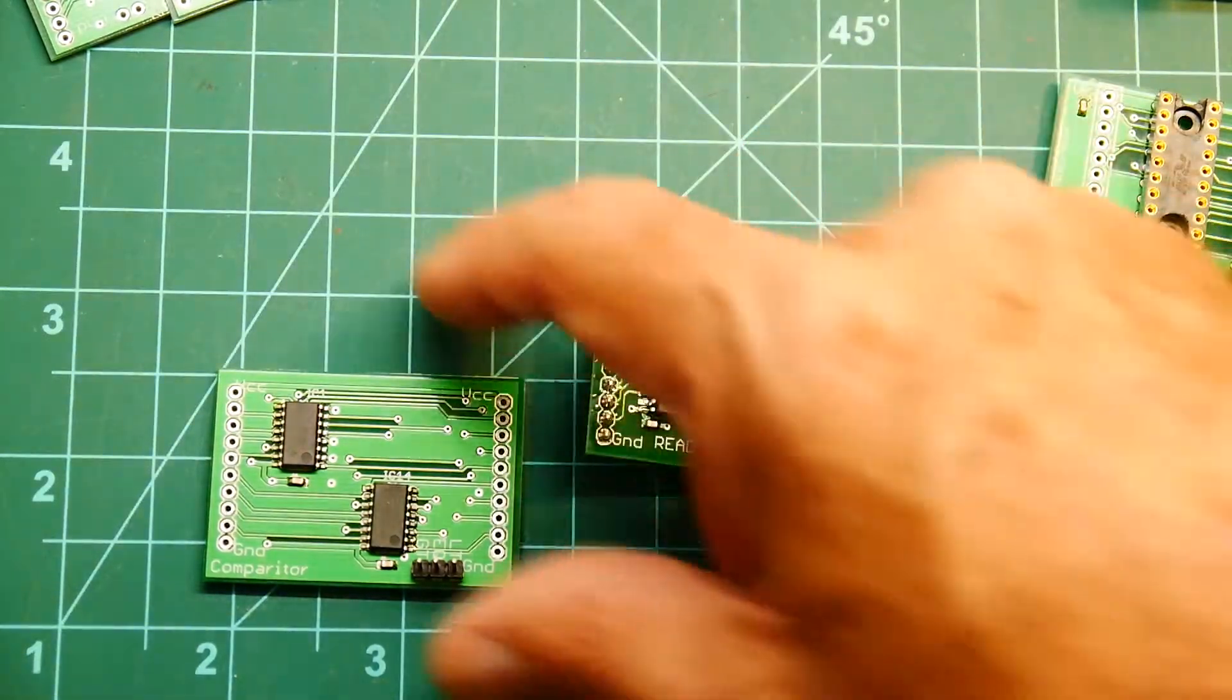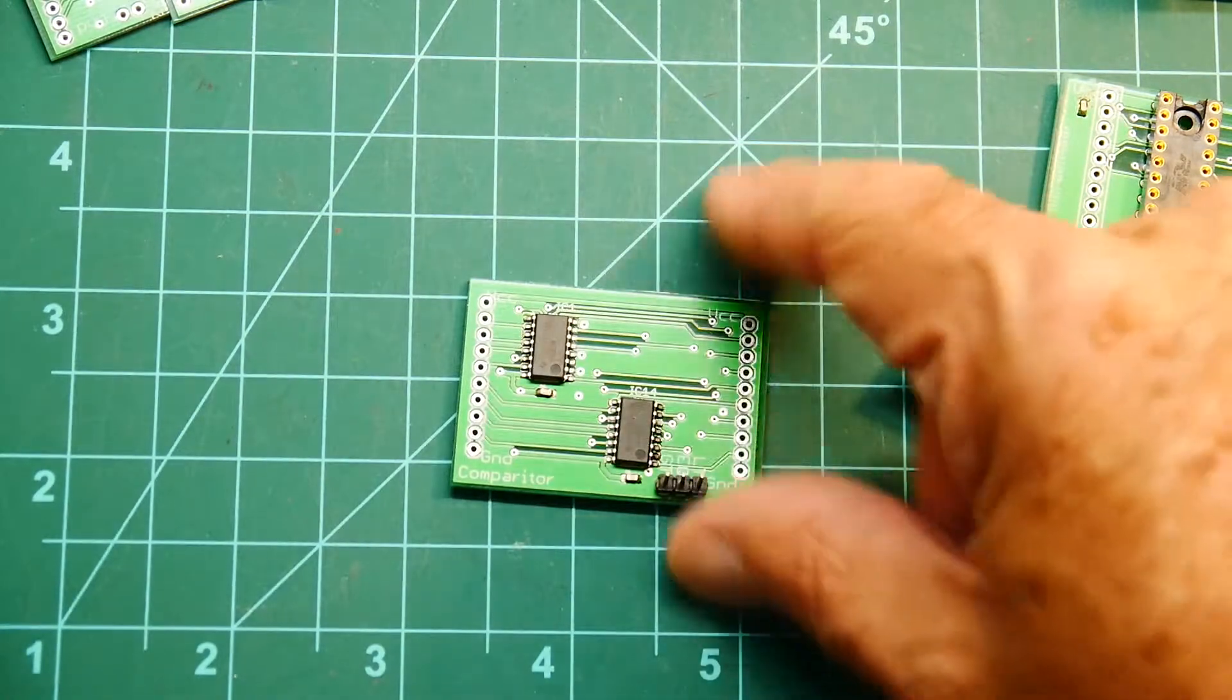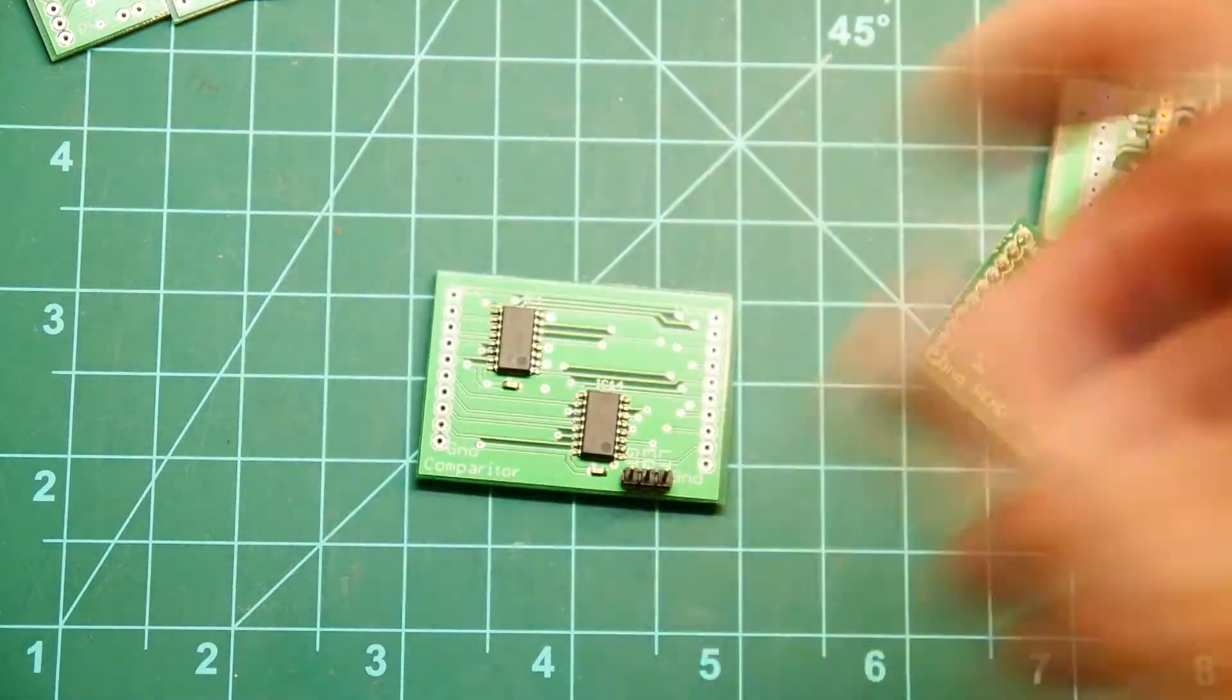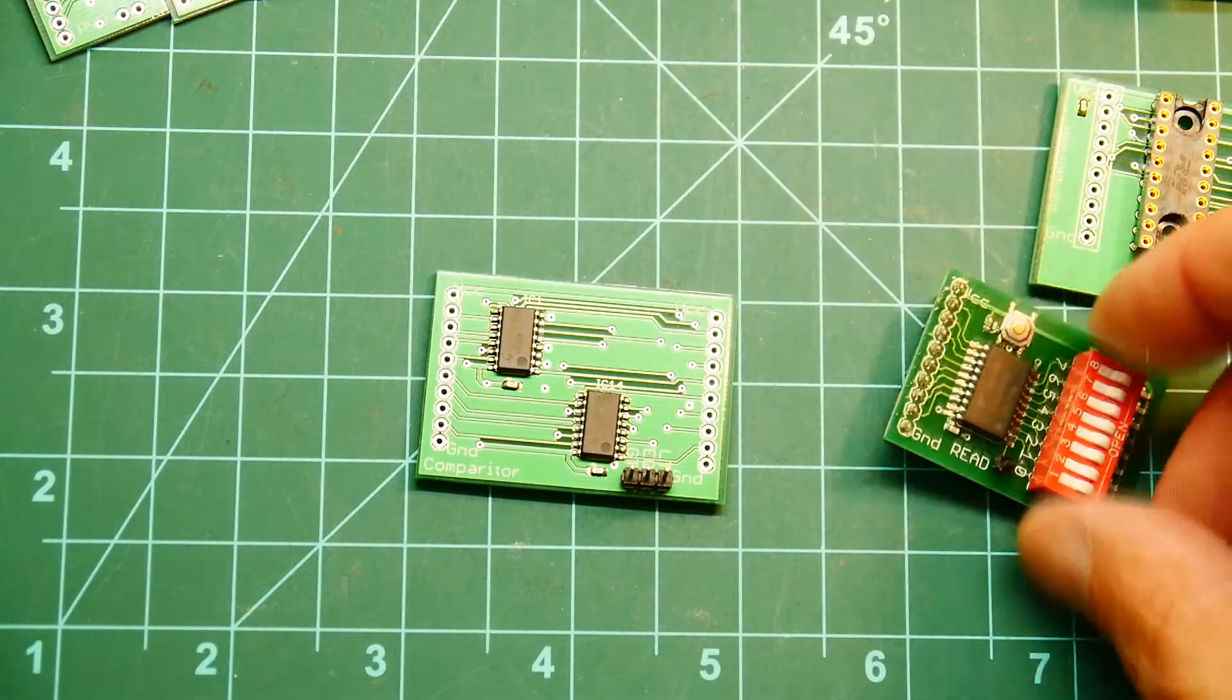We can test that out now, and then the little comparator board with the HC85s on them. Yeah, everything looks pretty good. Let's try this one out.